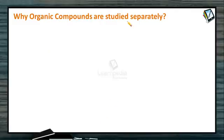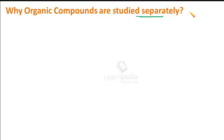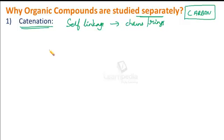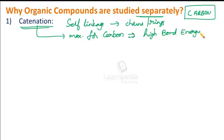Why are organic compounds studied separately? Carbon itself is the reason, because carbon has some special properties. The first is catenation — the tendency of an element to form chains or rings of identical atoms, meaning the self-linkage of identical atoms to form long chains or rings. Among all known elements, the catenation property is maximum for carbon because of its high bond energy. This self-linkage is achieved by combining with other carbon atoms by single, double, or even triple covalent bonds.